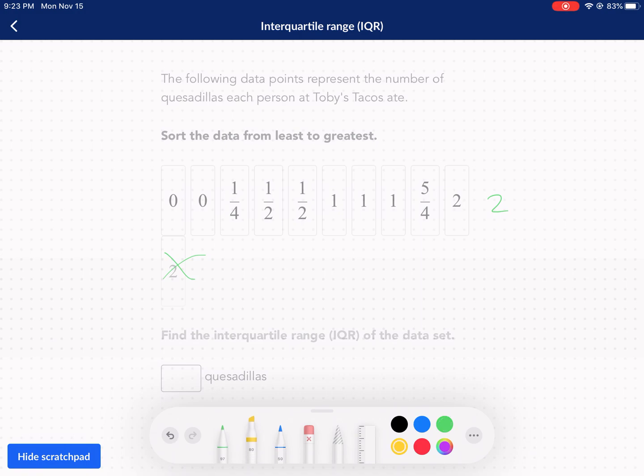Okay. Find the median first. One, two, three, four, five, six, seven, eight, nine, 10, 11. So I count to six.